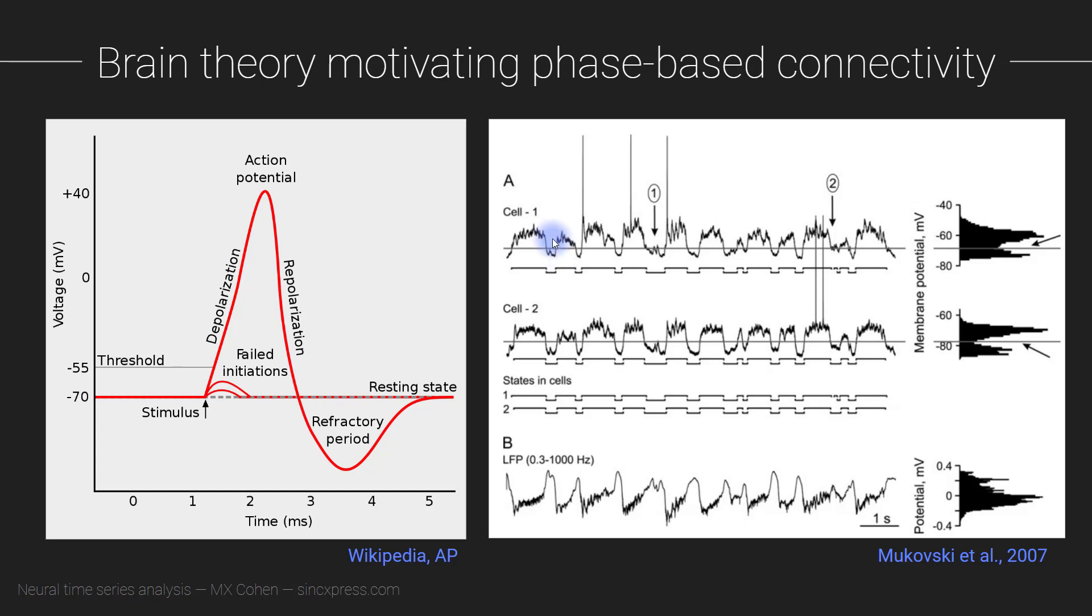During the awake state, it's a lot more complicated. You see a lot more fluctuations, but still the point is when your brain is active, these neurons do not have a flat resting membrane potential. They have a membrane potential that is going up and down, and it's alternating between periods of depolarization when action potentials are more likely to occur.